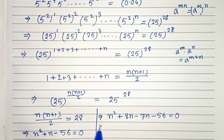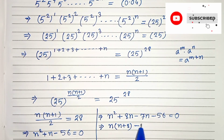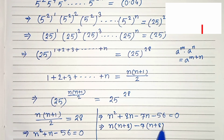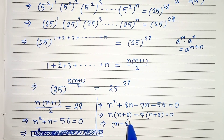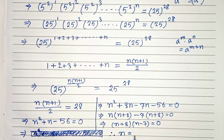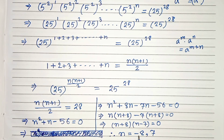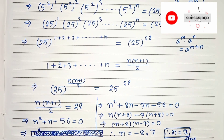So we can write n plus 8 times n minus 7 equals 0. Therefore our n is minus 8 or 7. Since n cannot be negative, our answer is n equals 7. This is our solution. Thanks for watching.